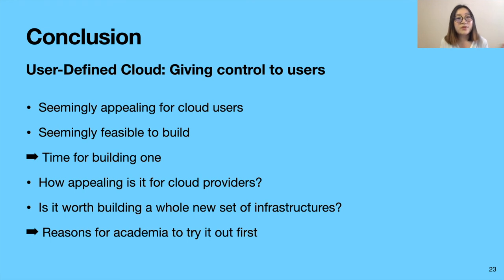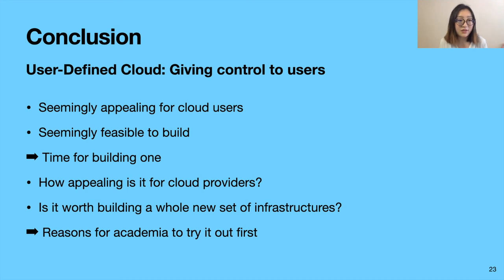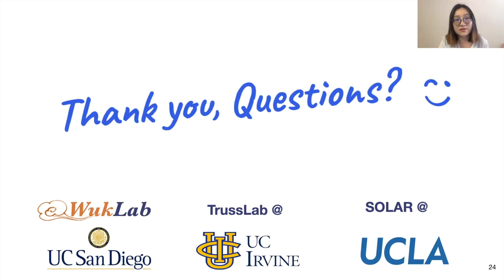To conclude, we proposed user-defined cloud by giving control to users. We believe that this is appealing for many cloud users, and a lot of the building blocks are already here, so it is the time for actually building the user-defined cloud. But it is still questionable how appealing it is for cloud providers and whether the benefits are worth building a whole new set of infrastructures. We believe these are the reasons for academia to try it out first. Thank you, we are now happy to take questions.